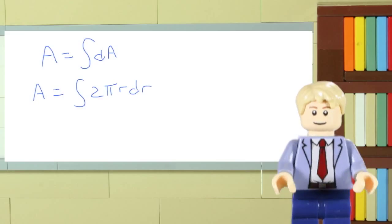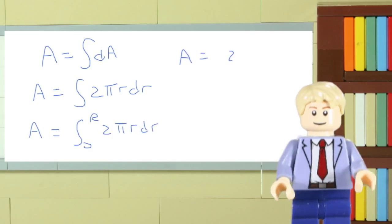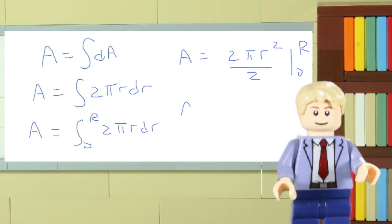We can set up our integral and substitute in our values from our drawing. The limits on this integral are easy to see. The smallest radius of a ring is 0. The biggest is capital R. Completing the calculation gives us a familiar result.